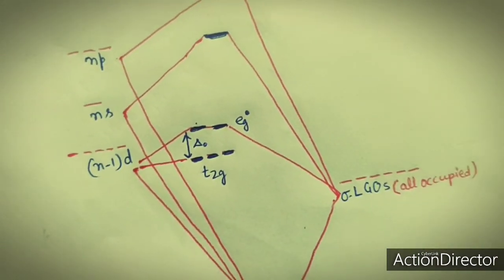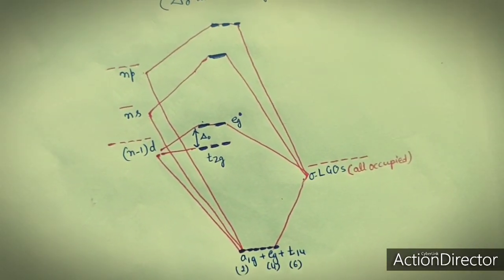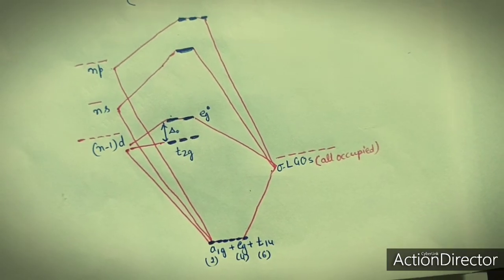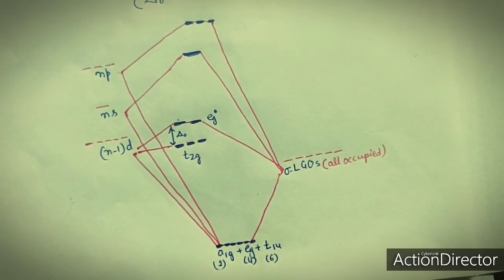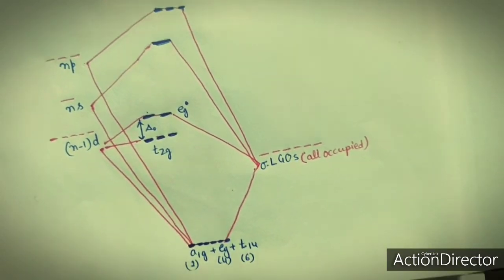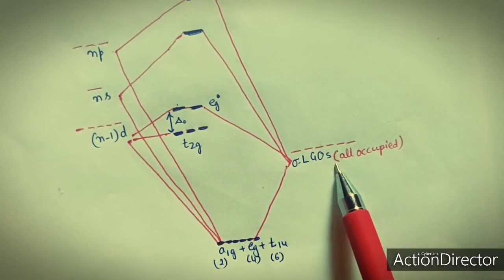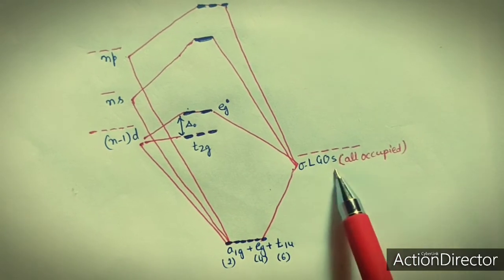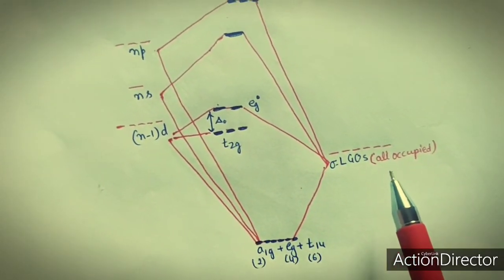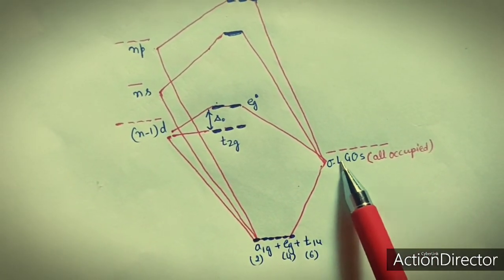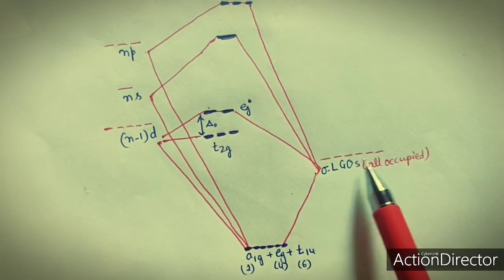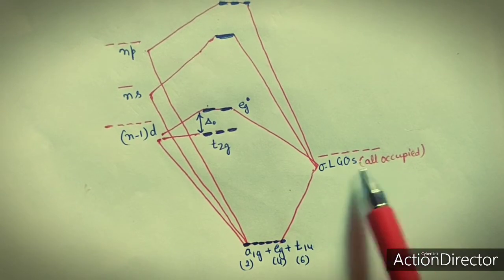Let us look at the molecular orbital diagram for this kind of complex. This is the molecular orbital energy level diagram generated from ligand field theory for octahedral complexes. In this diagram, these are the sigma ligand group orbitals of the ligand — all orbitals are occupied. There are 6 LGOs that can form sigma bonds because this is a sigma donor ligand, and each ligand has a tendency to donate one lone pair of electrons to the metal atom. So there are 6 sigma orbitals of ligands which are occupied, giving 12 electrons.